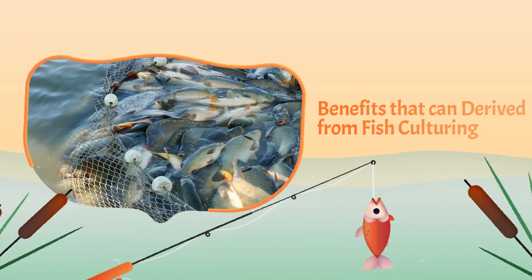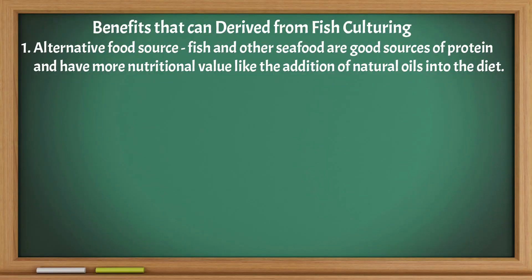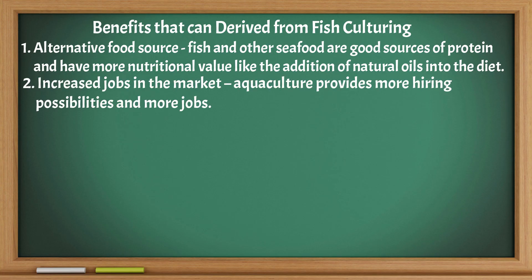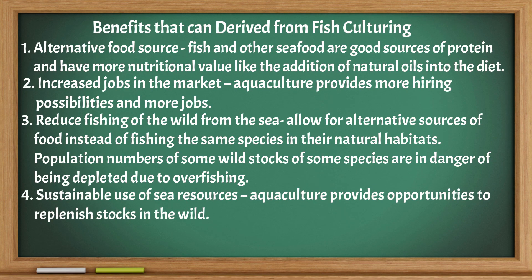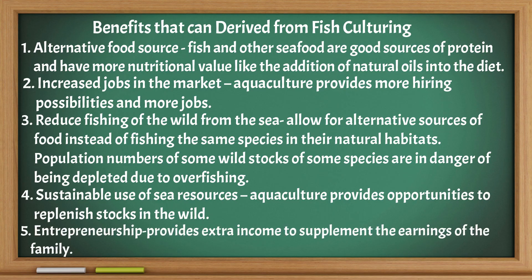Benefits that can be derived from fish culturing: Alternative food source — fish and other seafood are good sources of protein and have more nutritional value, including natural oils added to the diet. Increased jobs in the market — aquaculture provides more hiring possibilities and more jobs. Reduced fishing of the wild from the sea — allows for alternative sources of food instead of fishing the same species in their natural habitats, as population numbers of some wild stocks are in danger of being depleted due to overfishing. Sustainable use of sea resources — aquaculture provides opportunities to replenish stocks in the wild. Entrepreneurship — provides extra income to supplement the earnings of the family.